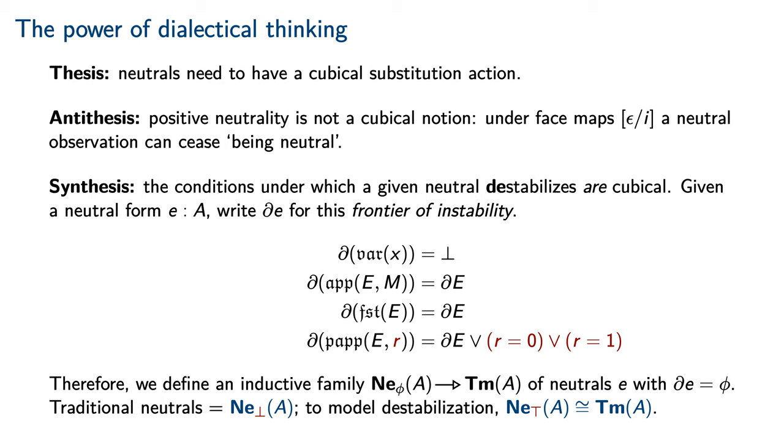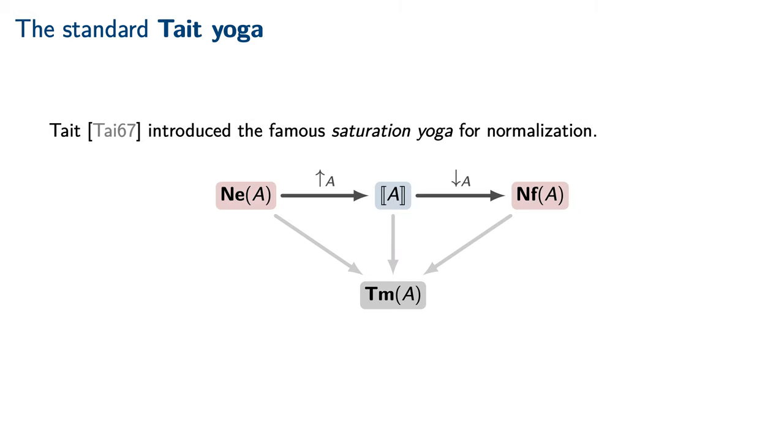To model destabilization, we ensure that the projection map from everywhere unstable neutrals to equivalence classes of type terms is an isomorphism. Classically, neutral and normal forms are integrated into a Tait computability model for normalization by means of Tait's famous saturation yoga. In particular, a neutral form can be reflected into an element of the interpretation, which is called a computable element, and a computable element can be reified into a normal form. These reflection and reification maps must commute with the projection of equivalence classes of type terms. For example,